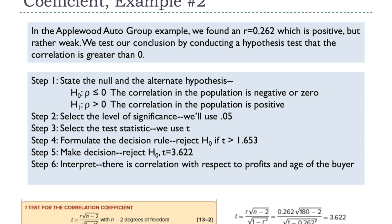Using Formula 13-2, we get a t-value of 3.622, so we reject the null hypothesis. We conclude that there is a positive correlation between profits and the age of the buyer. While we still don't have a strong indication of what an advertising campaign to older buyers would achieve — since the r was rather low — there are definite positive indications of a relationship between the variables. That's it for part one of chapter 13; part two will be in another video.